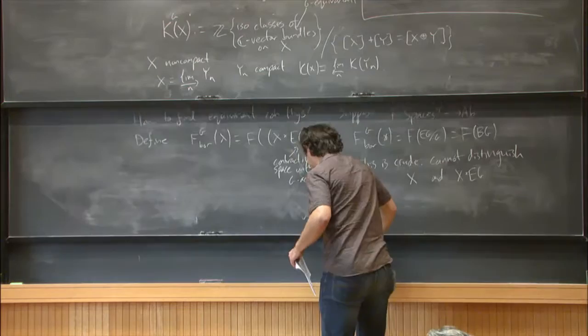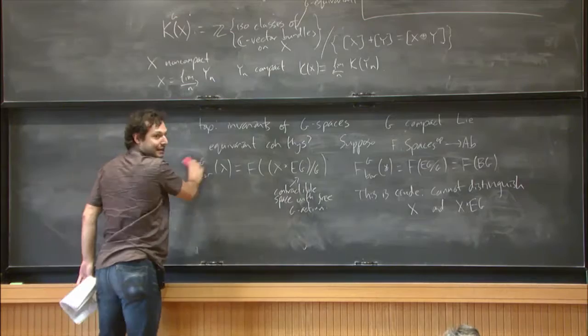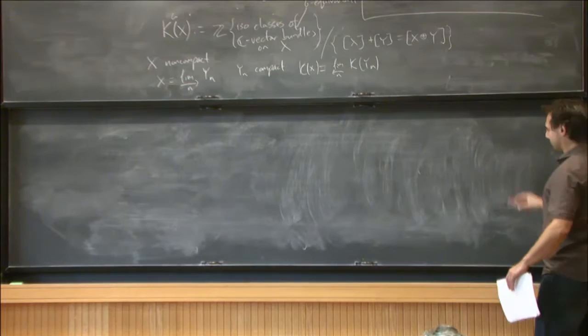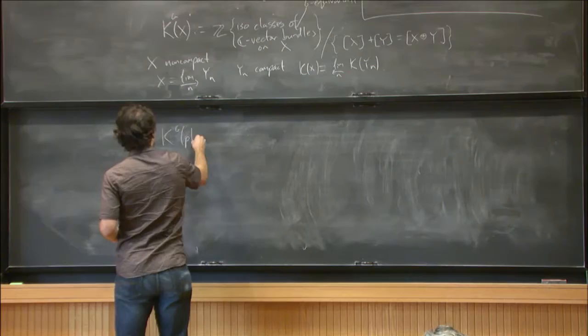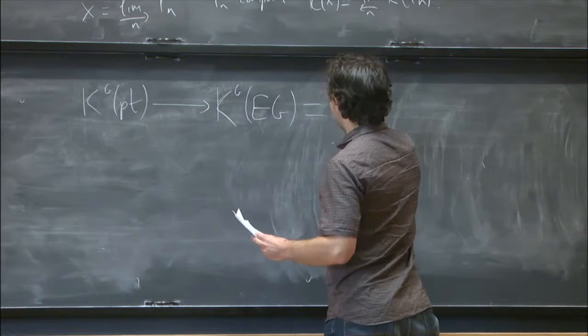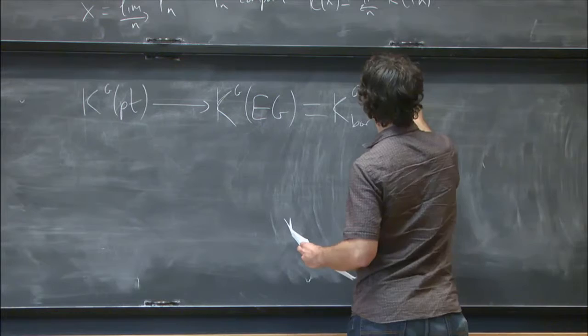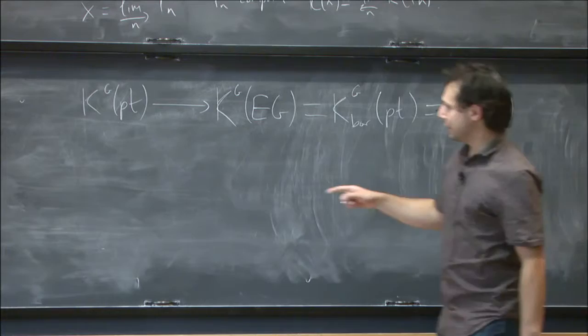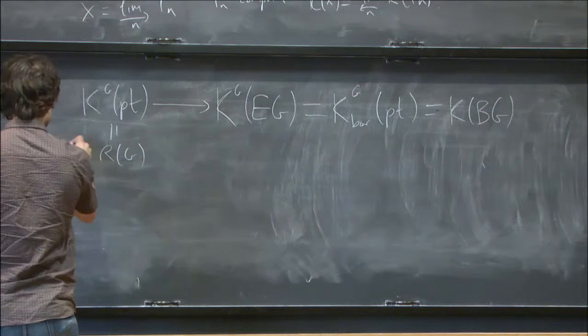All right. So how do we compare that to the cruder thing, the Borel equivariant K-theory? And the results of the comparison might be slightly surprising if you haven't seen it before. Well, since this is a contravariant functor, I can pull back along the projection from EG to the point. And that's, in turn, that's the Borel equivariant K-theory of the point, which is just the K-theory of BG. All right. So the content of this theorem is really going to be a computation of this, in terms of this representation ring here.